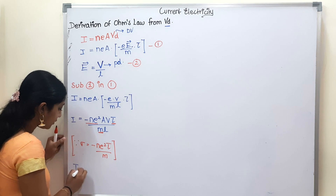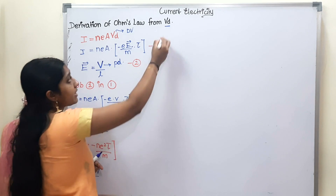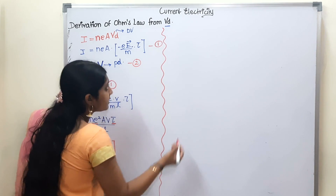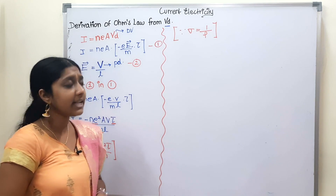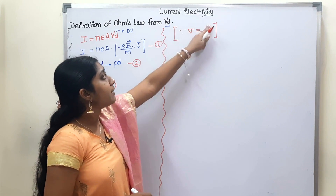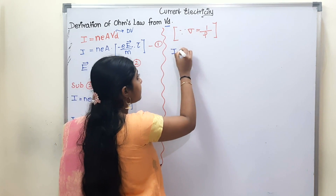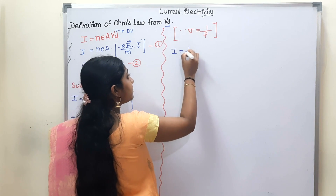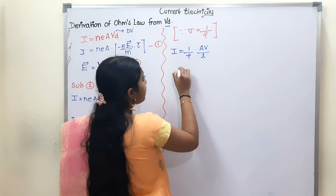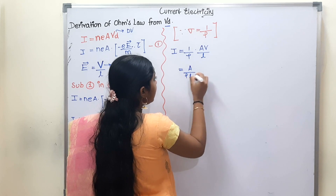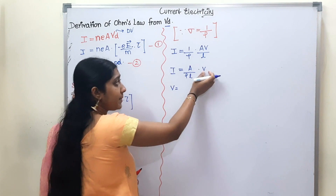Current is equal to sigma times A into V divided by L. Now, sigma equals 1 by rho, where rho is resistivity and sigma is conductivity — conductivity is the inverse of resistivity. Substituting sigma equals 1 by rho, we get I equals A divided by rho·L into V, which gives us V equals I times (rho·L by A).